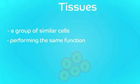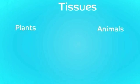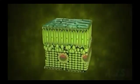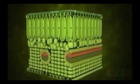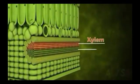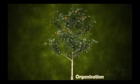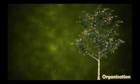Today we will discuss about tissues. Tissues are a group of similar cells with a definite function. We see tissues both in plants as well as animals. Many cells of similar structure join together to form a tissue. If we observe the internal structure of a leaf, we see tissues like xylem and phloem. Such tissues organize together to form organs.